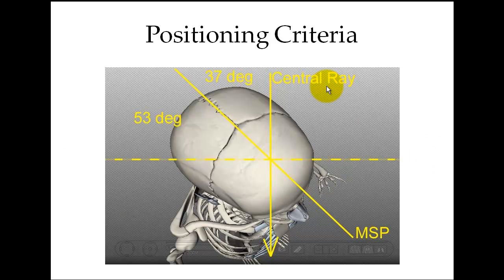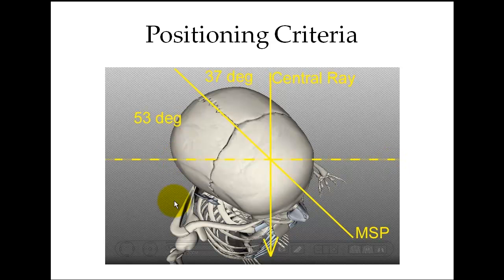Here's our positioning criteria again from a bird's eye view. The midsagittal plane is here. The central ray should be coming posteriorly, exiting the orbit side down. The dotted line represents the image receptor. Here's our 53-degree angle with the midsagittal plane from the image receptor, which leaves a 37-degree angle between the midsagittal plane and the central ray.